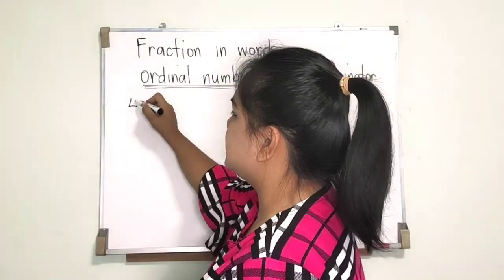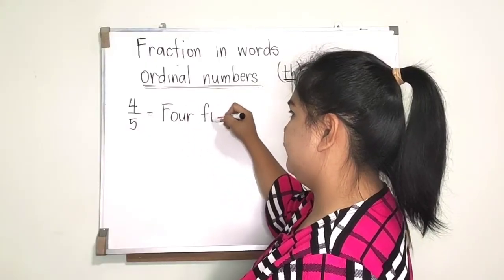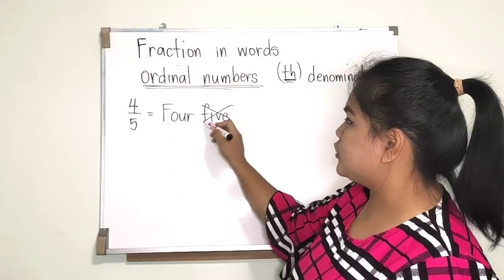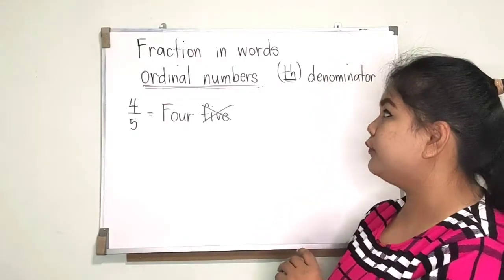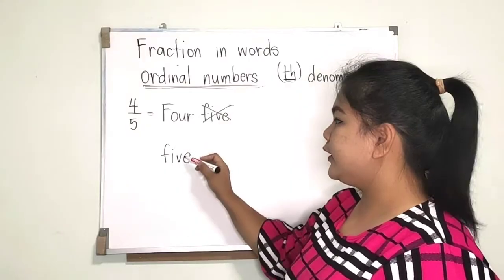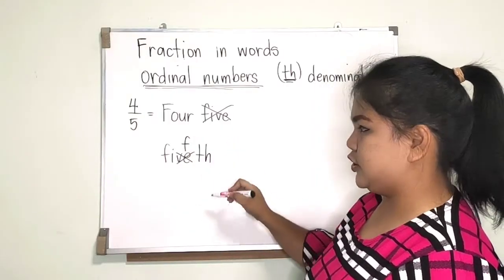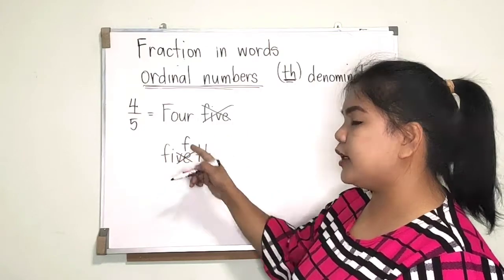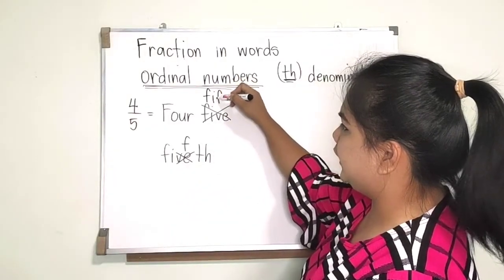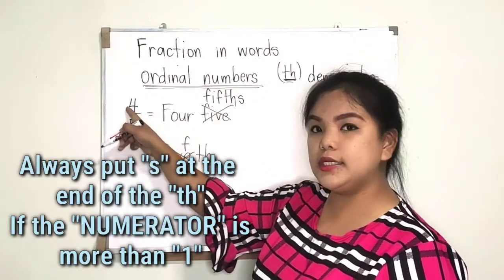Some kids will say the fraction 4/5 is just 'four, five.' But this is not correct, because we are going to change the denominator into ordinal numbers. So instead of 'five,' we change VE to F and add TH — so it becomes FIFTH. And we need to add S because four is more than one, so it is 'four fifths.'